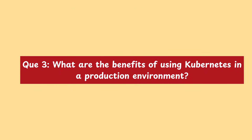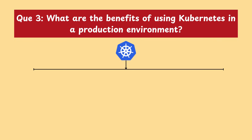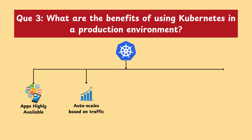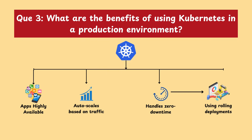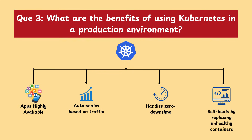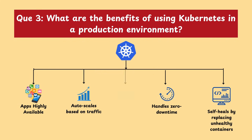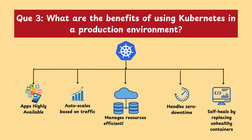Moving on with our next question: what are the benefits of using Kubernetes in a production environment? In production, Kubernetes is very useful because: first, it keeps applications highly available by restarting failed containers; second, it auto scales based on traffic; third, it handles zero downtime updates using rolling deployment; fourth, it self-heals by replacing unhealthy containers; and fifth, it manages resources efficiently, reducing cloud cost.